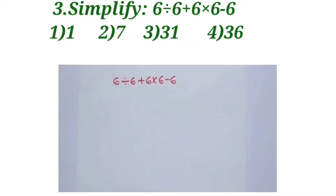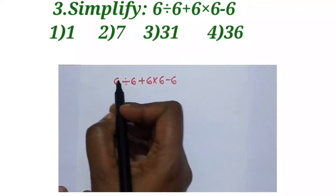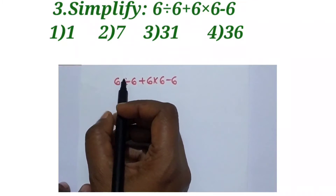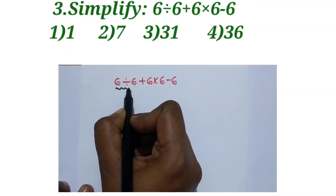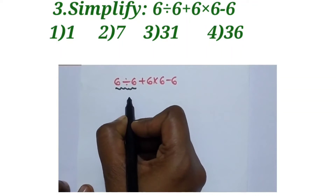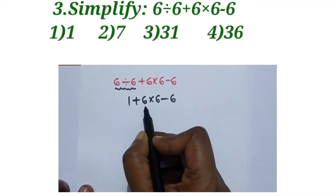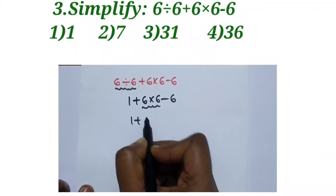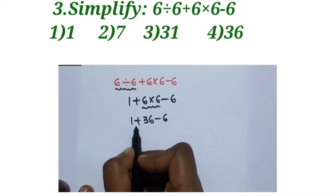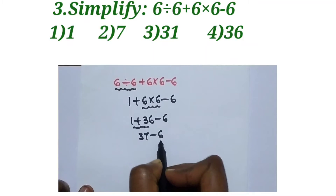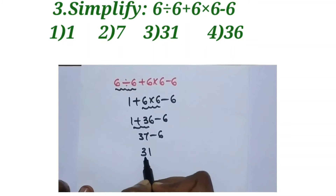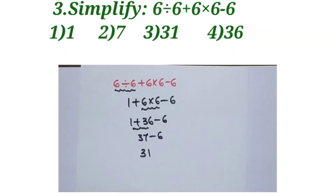Next question: Simplify 6 divided by 6 plus 6 into 6 minus 6. Using BODMAS order: first division — 6 divided by 6 equals 1. Then multiplication — 6 into 6 equals 36. So we get 1 plus 36 minus 6. Addition gives 37 minus 6. Subtraction gives 31. Option 3 is the right answer for this question.